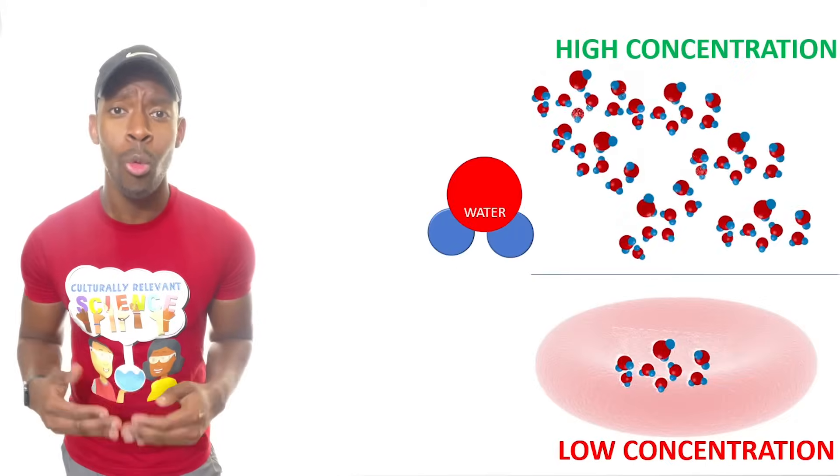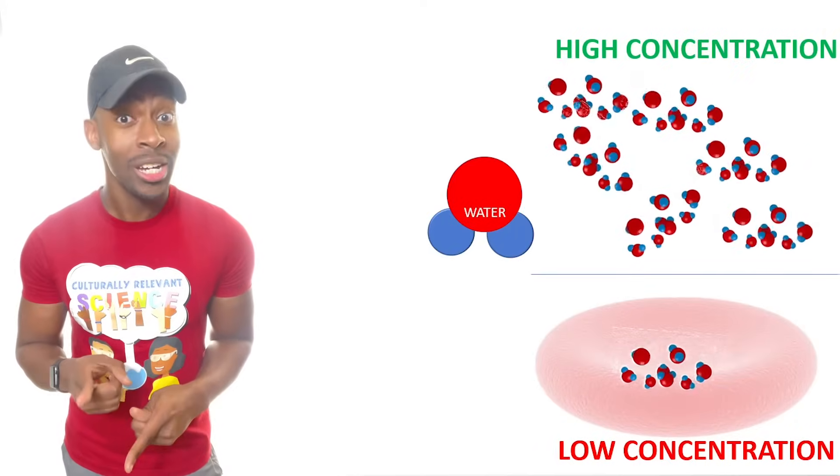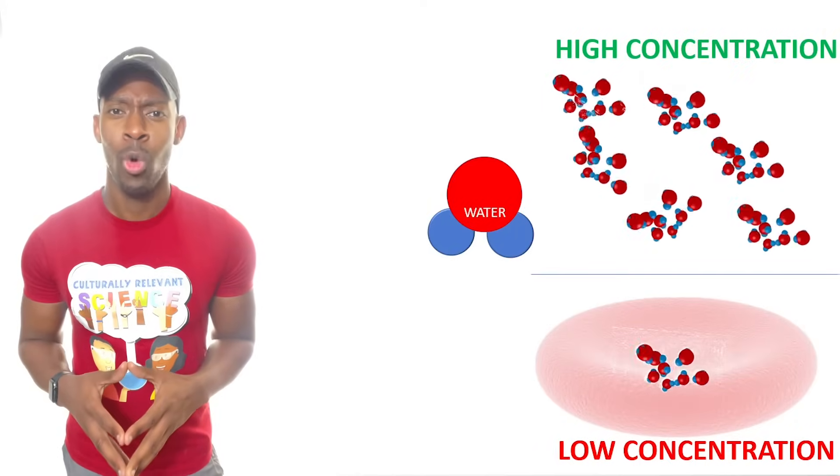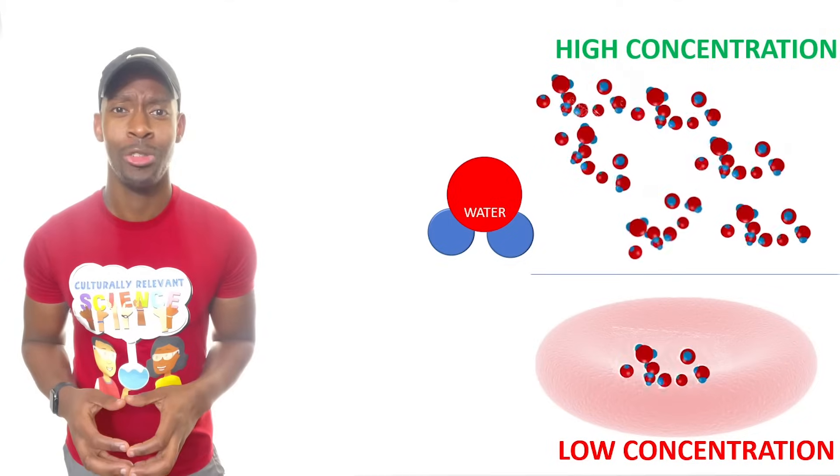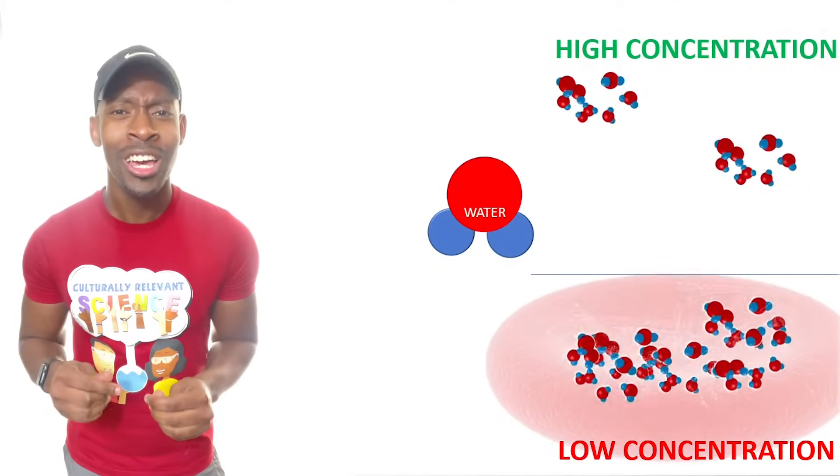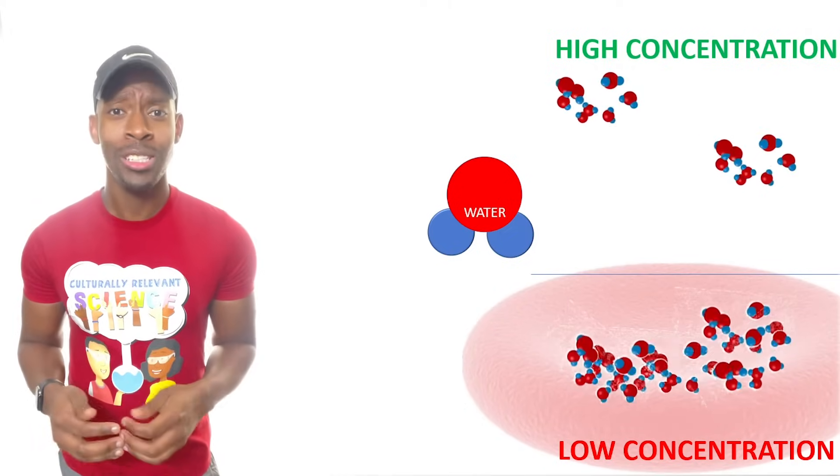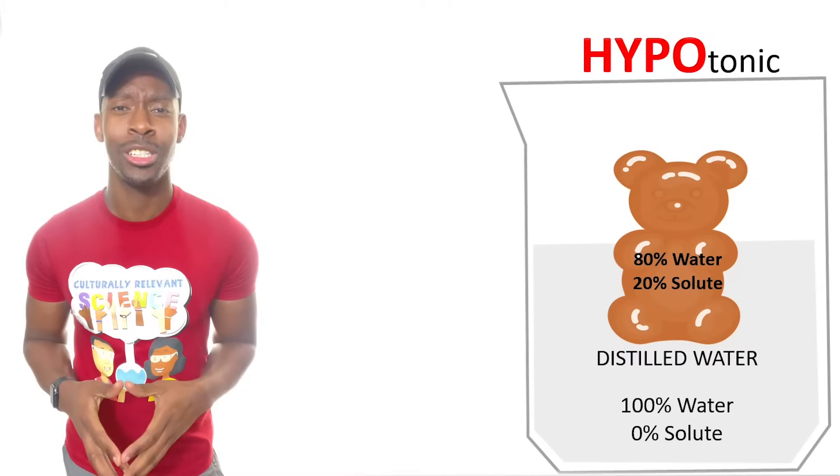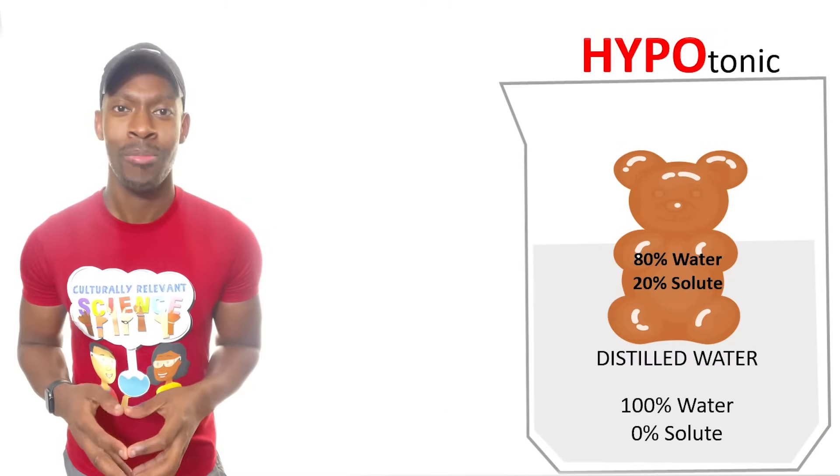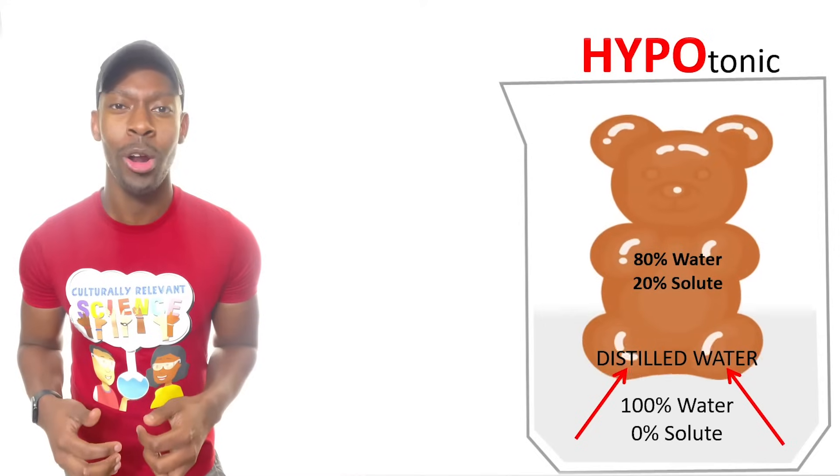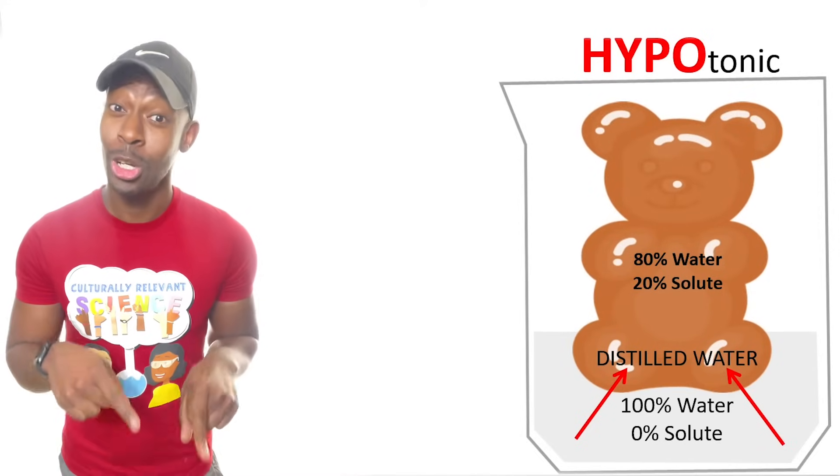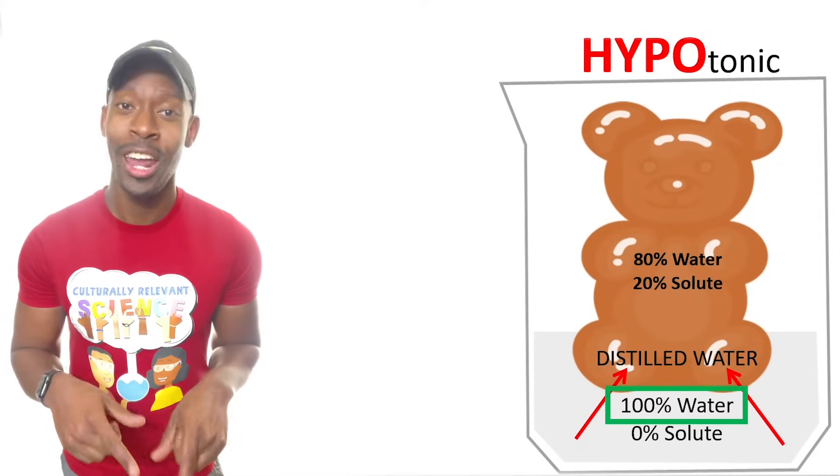And these ratios control where water is going to flow, but water always wants to go from high to low concentrations. So we use this to compare and see where the water would be moving. If the bear was placed into the distilled hypotonic solution, it would swell because there's a higher amount of water in the solution and a lower amount of water in the bear.